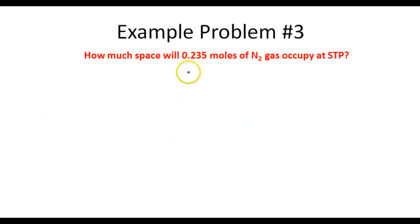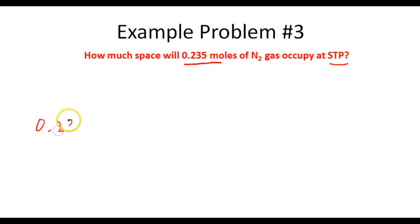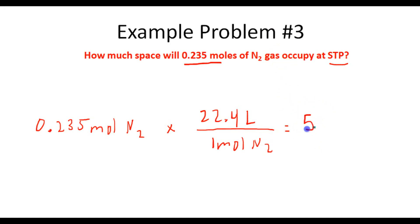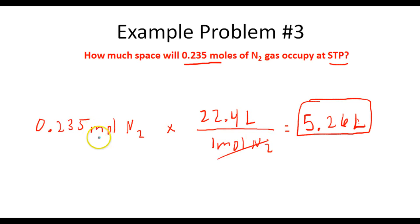Let's take a look at another problem. How much space will 0.235 moles of nitrogen gas occupy at STP? We've got 0.235 moles of nitrogen gas and we want to know how much space this occupies at STP. We know one mole of nitrogen gas at STP occupies 22.4 liters. So we take 22.4 times 0.235 and we end up with 5.264, or simply 5.26 liters using the correct number of significant figures, as moles of N2 cancels.